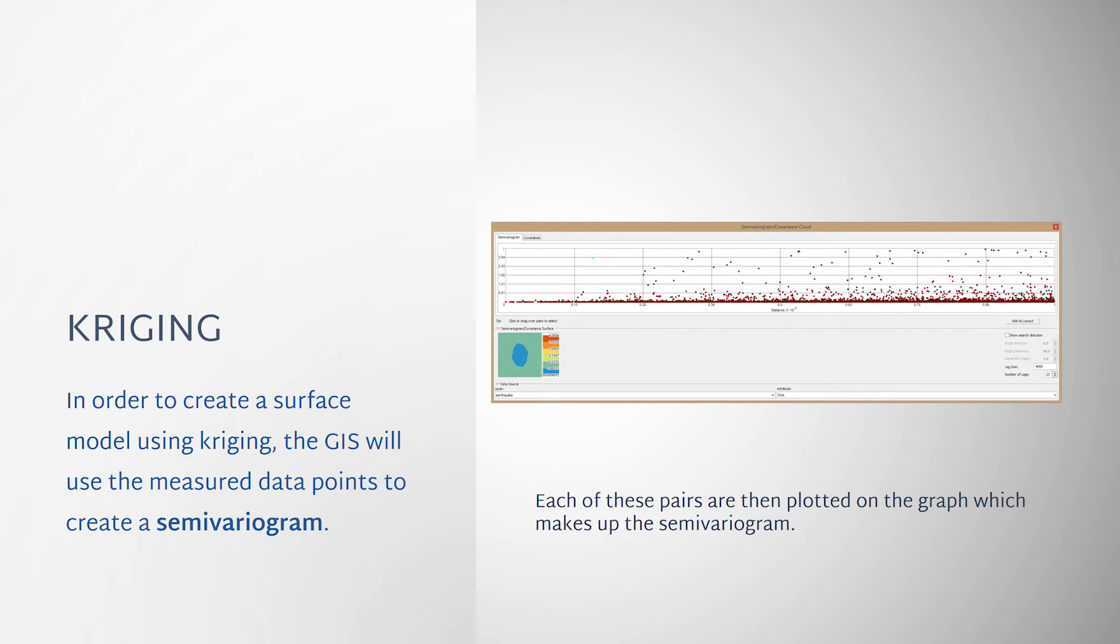In order to create a surface model using Kriging, the GIS will use the measured data points to create a semi-variogram.